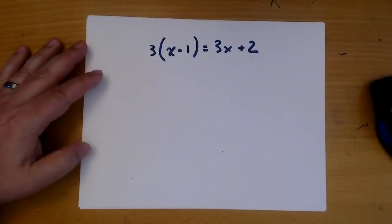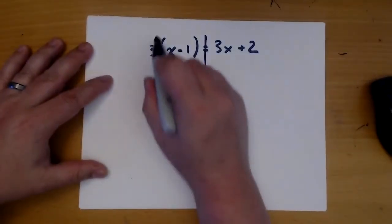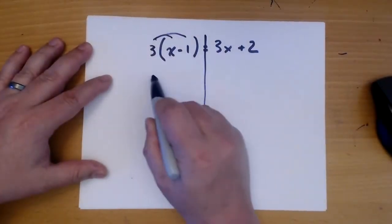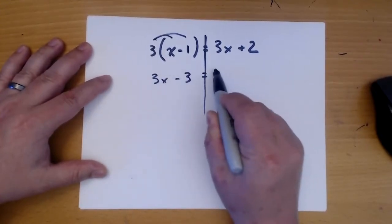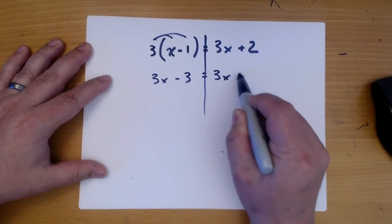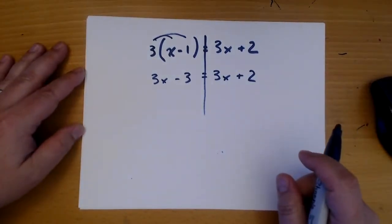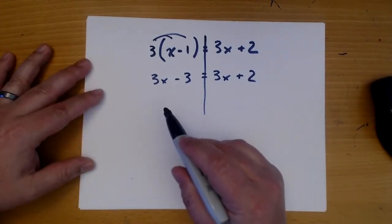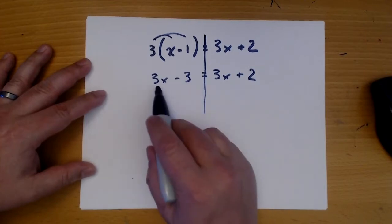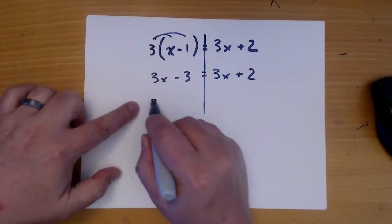So first we'll draw a line and we distribute. This side there wasn't any distribution, so we just leave it alone and copy it down. Now let's get all of our x's in one place. So this is okay where it is now, so we leave it alone.